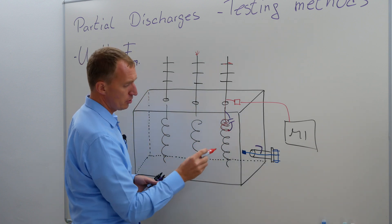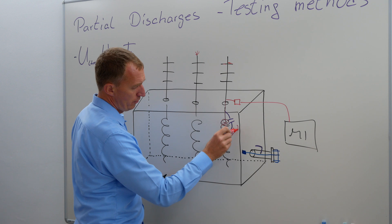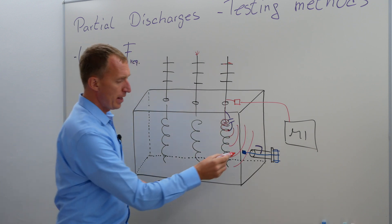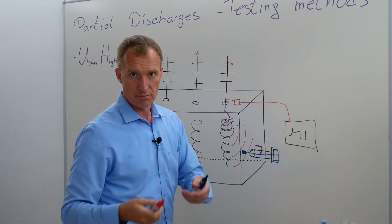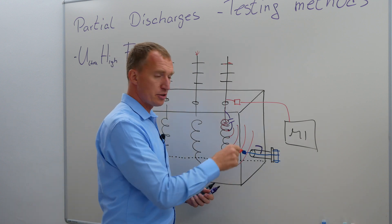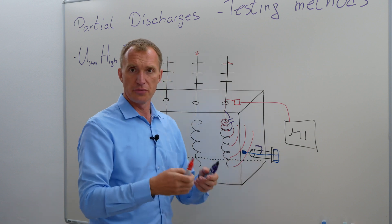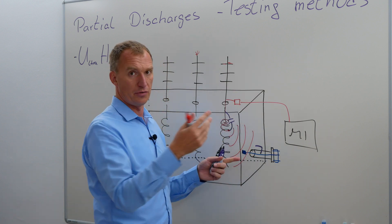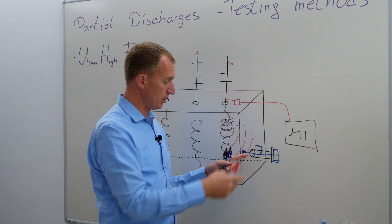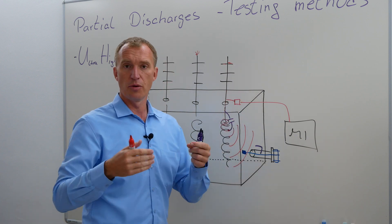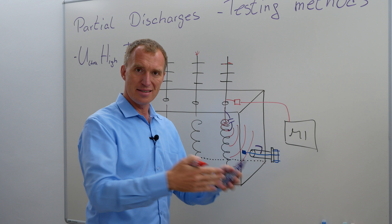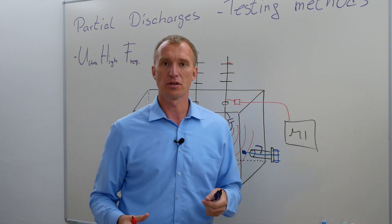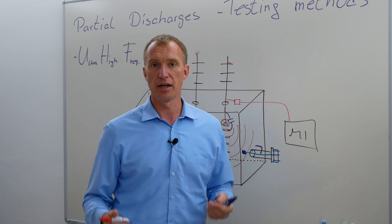However, if I have a partial discharge here, this partial discharge will create an electromagnetic wave, and this sensor can, at least we hope, catch this signal and be able to figure out, whoa, wait a second, there is a certain signal. Very often, if you're lucky, you can correlate it with the electric signal as well. Then you are measuring more or less inside the shielded room, the transformer, you're able to measure partial discharges with UHF.